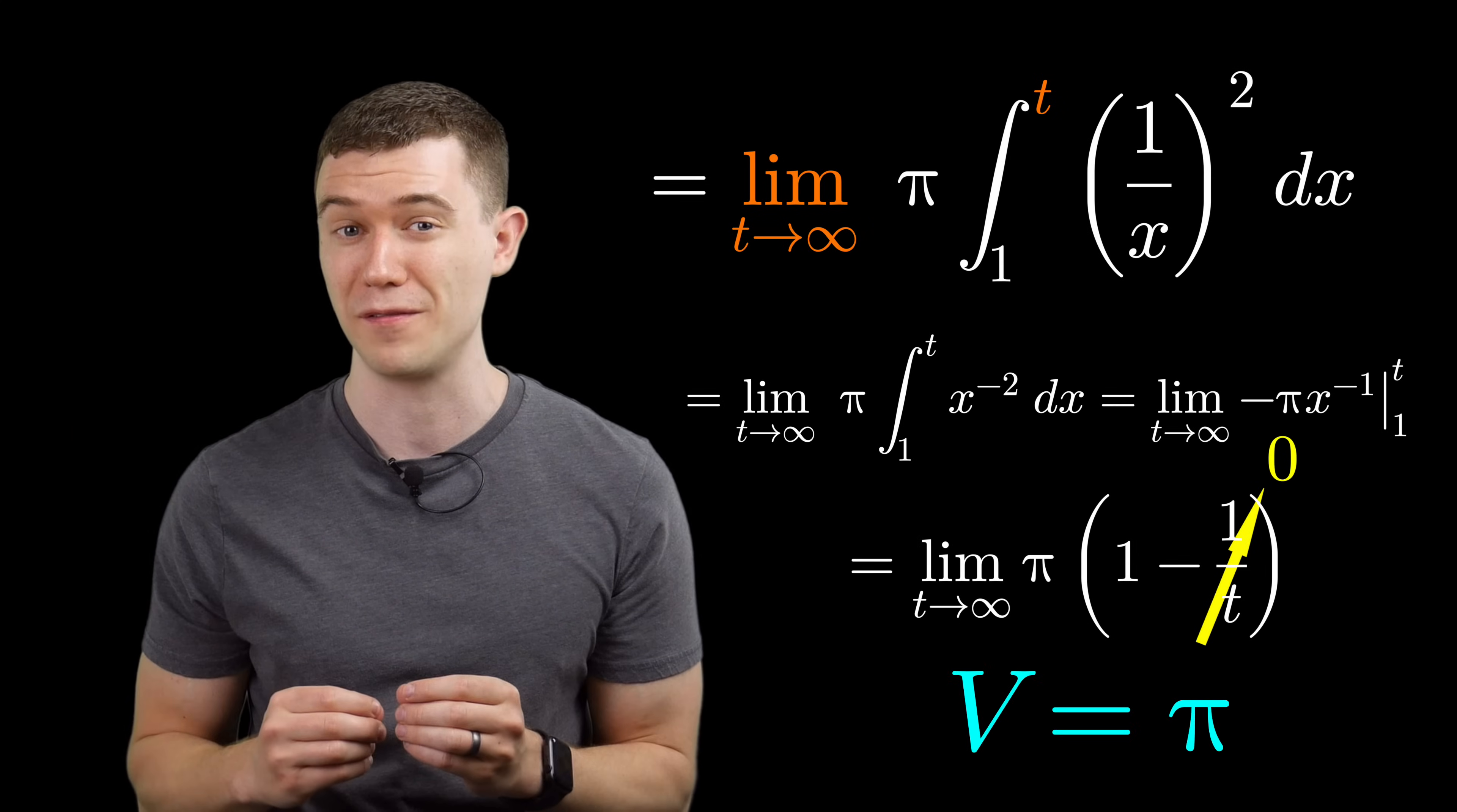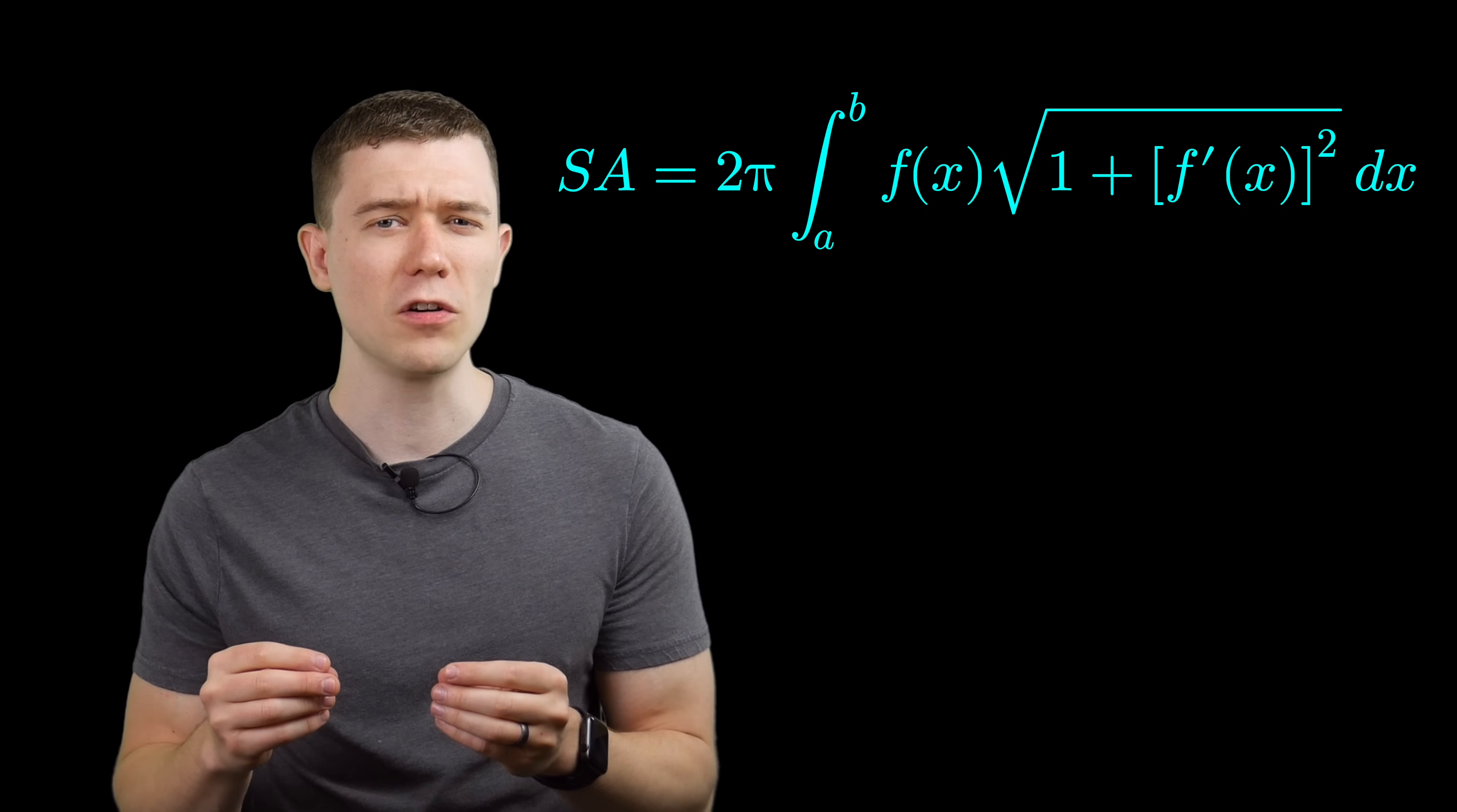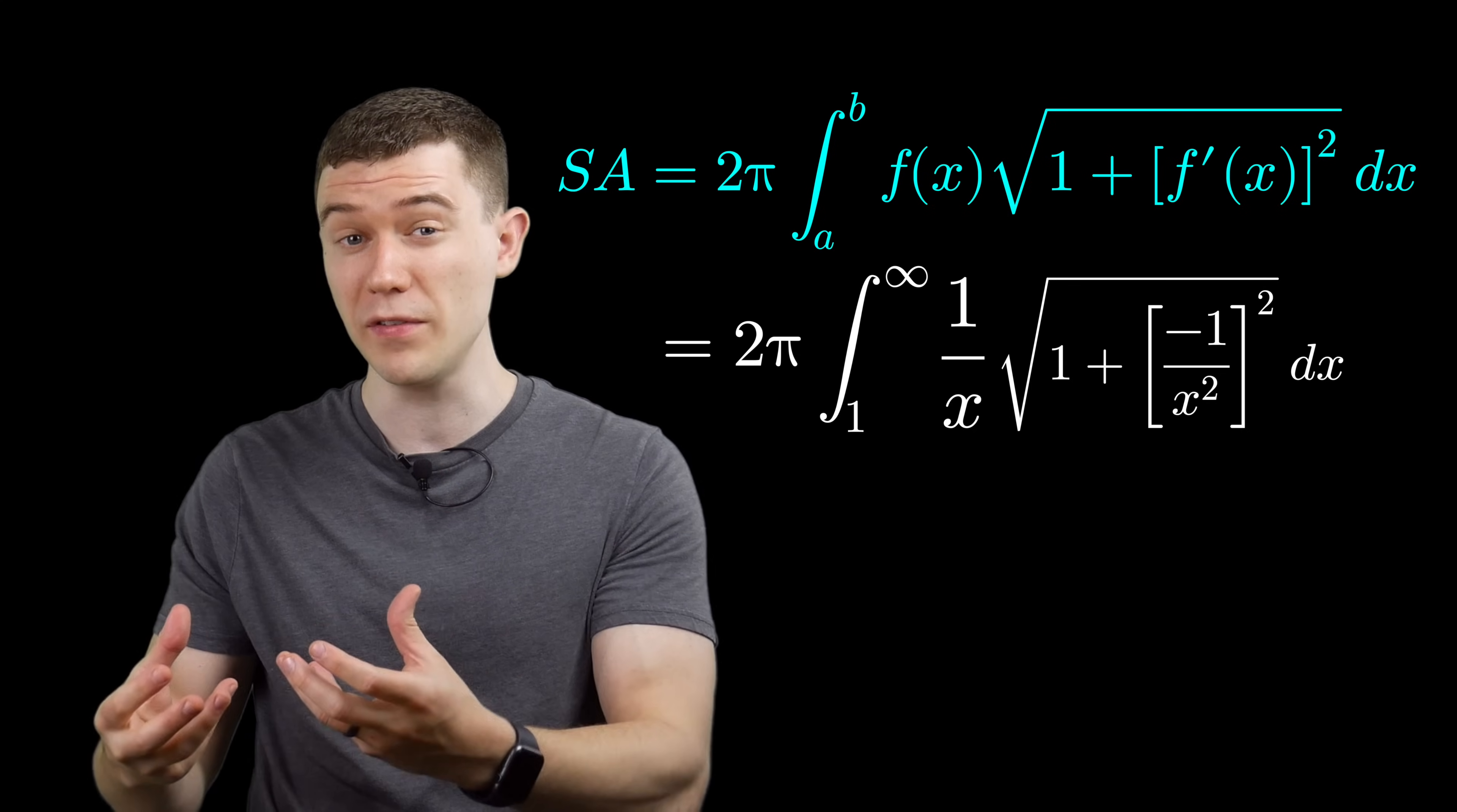That's pretty interesting in itself. But things start to get interesting when we calculate the surface area. Here's the integral formula for a surface area of revolution. We'll keep those limits of integration the same. We'll stick the function itself out front. And then it's square root of one plus the function's derivative squared.